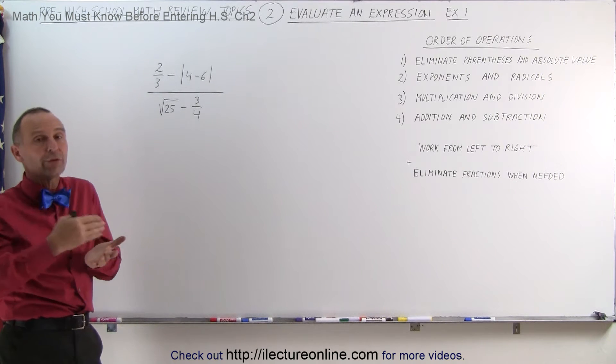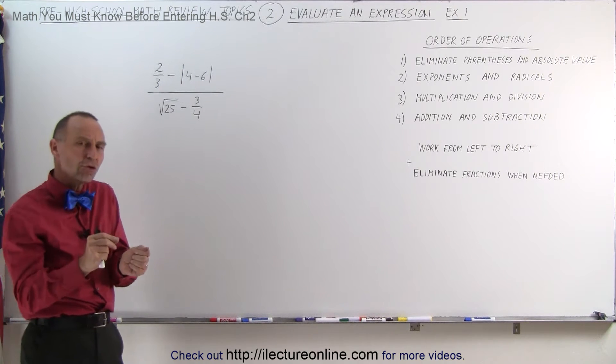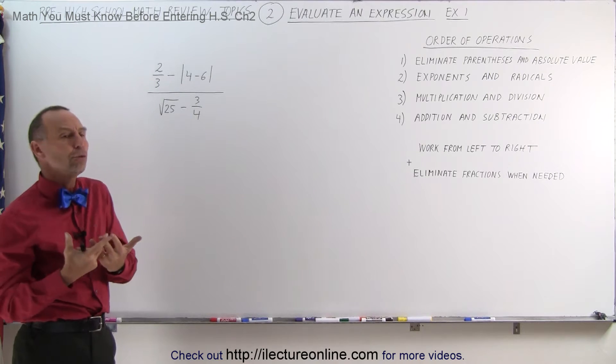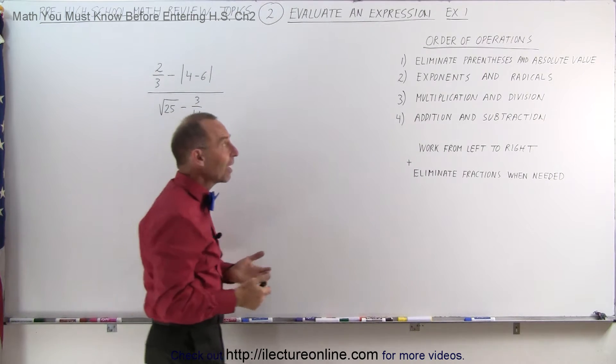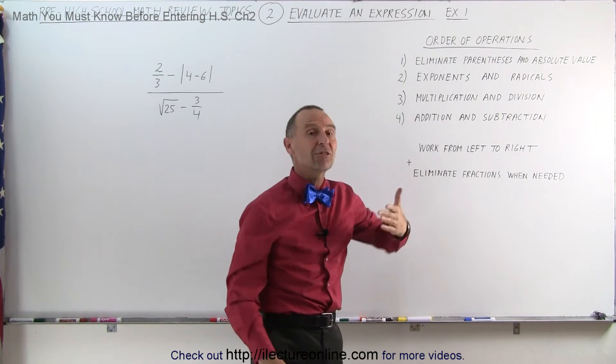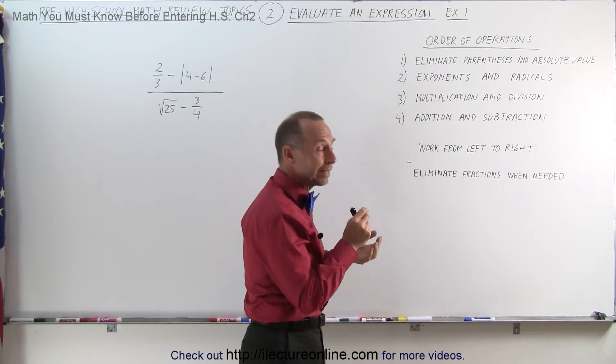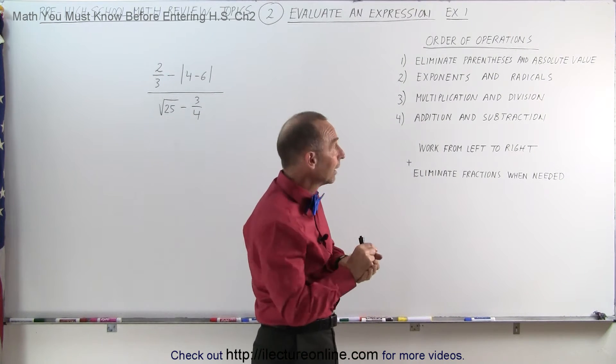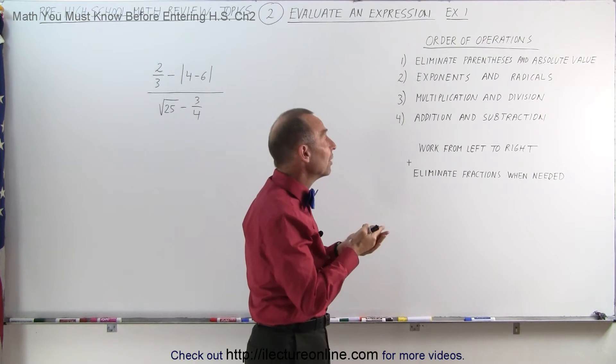The plan of attack is what we call the order of operations: which things should you do first, which things should you do next, and so forth. For example, you first want to eliminate parentheses and absolute value symbols, then you want to take care of exponents and radicals.